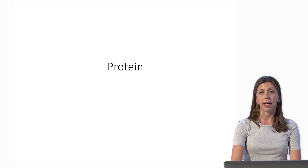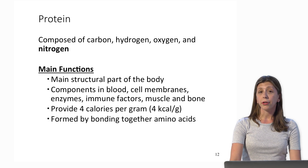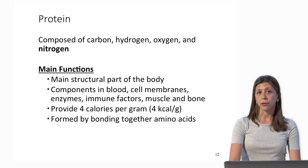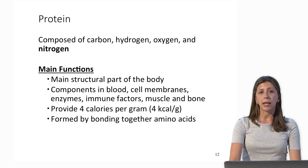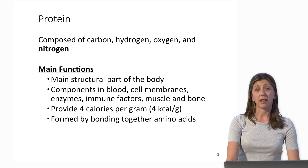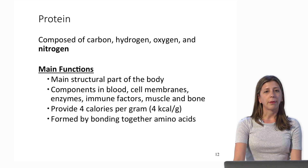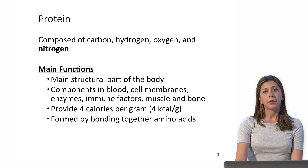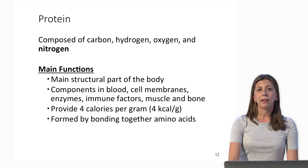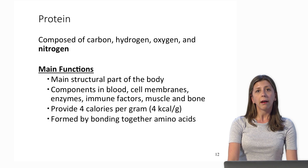Moving on to the second macronutrient: protein. Structurally, protein contains carbon, hydrogen, oxygen, and nitrogen. Nitrogen is bolded because that's different from carbohydrates and fat. Protein is a really dynamic nutrient because it does so much for us in the body. Its main functions include serving as a main structural component of the body — it's a component of blood cells, cell membranes, enzymes, immune factors, muscle, and bone. Protein also gives us energy, providing four calories per gram, similar to carbohydrates. Proteins are formed from amino acids — those building blocks that link together to form proteins.